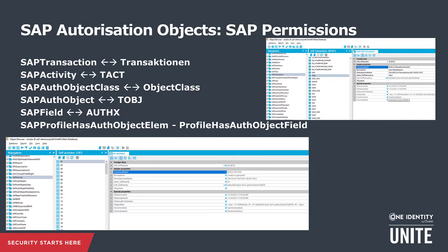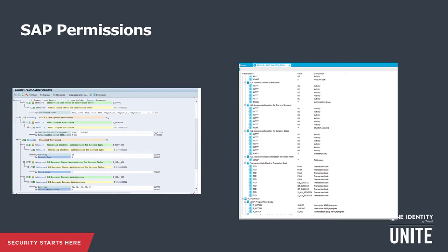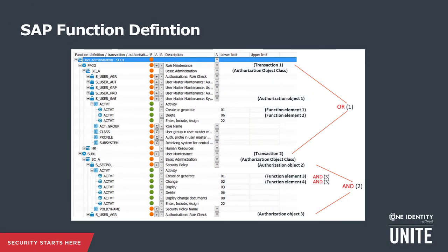One Identity Manager's support for SAP permissions provides the following schema objects and their mappings: Transactionen in the subschema is mapped to Sub-Transaction; AuthX in the SAP schema is mapped to a Sub-Field in One Identity Manager. This is an incomplete list — there are far more schema objects that are mapped. SAP permissions in the SAP GUI and the same information for an SAP role in One Identity Manager again show One Identity Manager closely following SAP style and terminology.